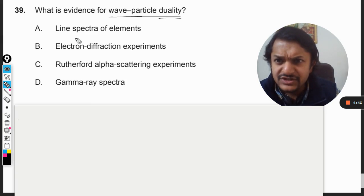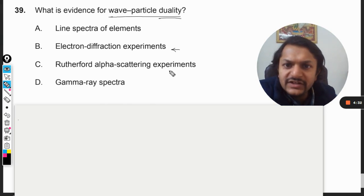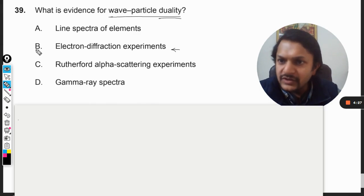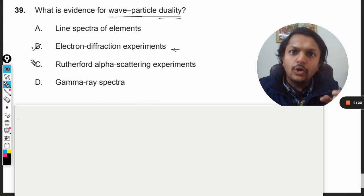Line spectra of elements - it has no relation with this. Electron diffraction experiments - well yes, this has a relation, I will explain. Rutherford's alpha scattering experiment - no relation with particle duality. Gamma-ray spectra - no, not at all. So our answer is B.